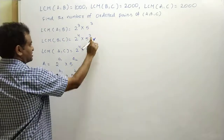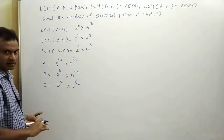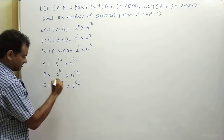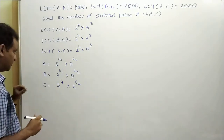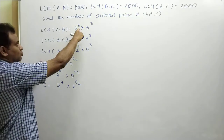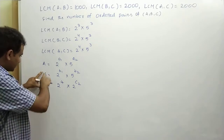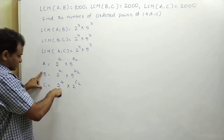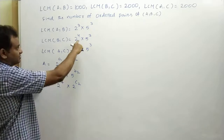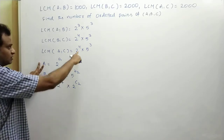In the second and third expressions, 2 is taking the maximum power of 4. The common variable between these two is c, so c must take the maximum power of 4, meaning c1 = 4. Now for LCM(a, b), 2 takes maximum power 3, so one of a1 or b1 must equal 3. For LCM(b, c), since c1 = 4 already, b1 must be less than or equal to 4.